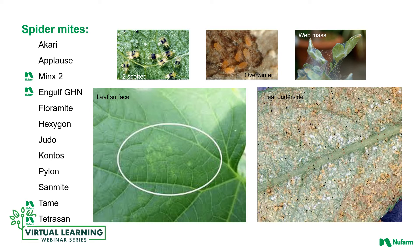Controlling mites reactively is difficult. Using Tetrasan as an ovicide means an adulticide needs to be mixed in, such as Hexagon, Judo, or Engulf. Pylon and Minx-2 can be applied more than once, but rotate after the second application. Sanmite is also use-restricted. Reviewing all listed products, you should have at least three materials in your tank mix for treatment at one time — at least two adulticides plus an ovicide.